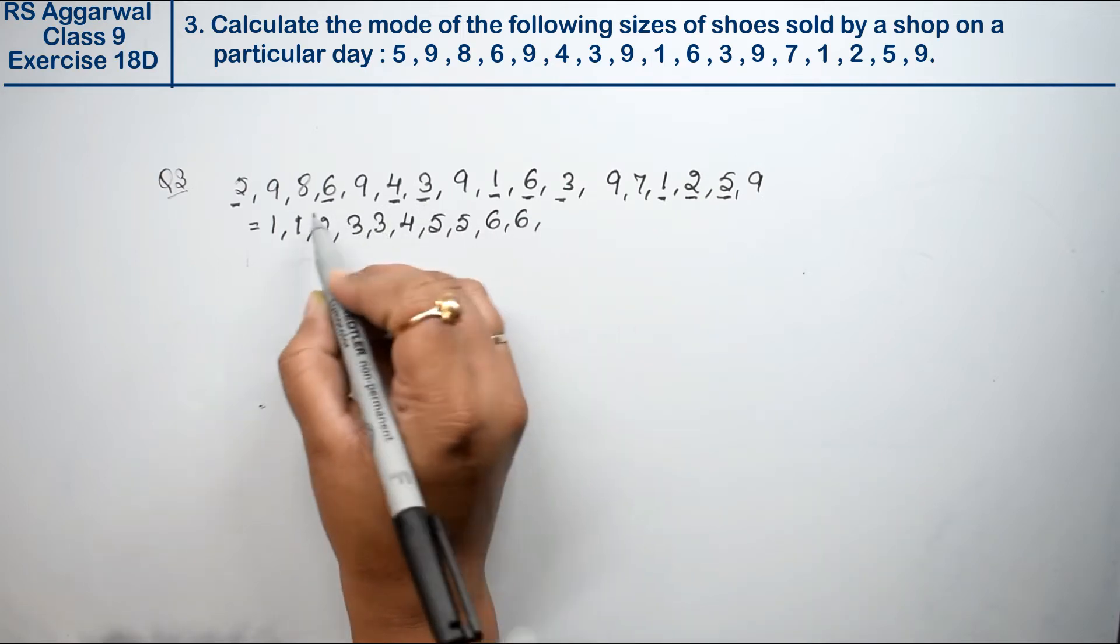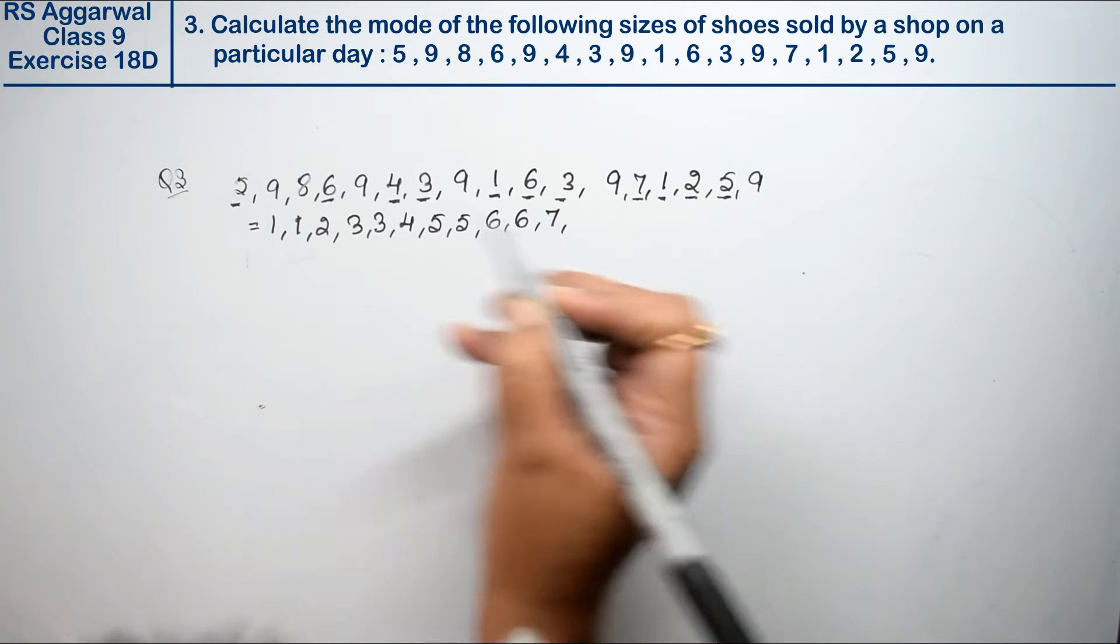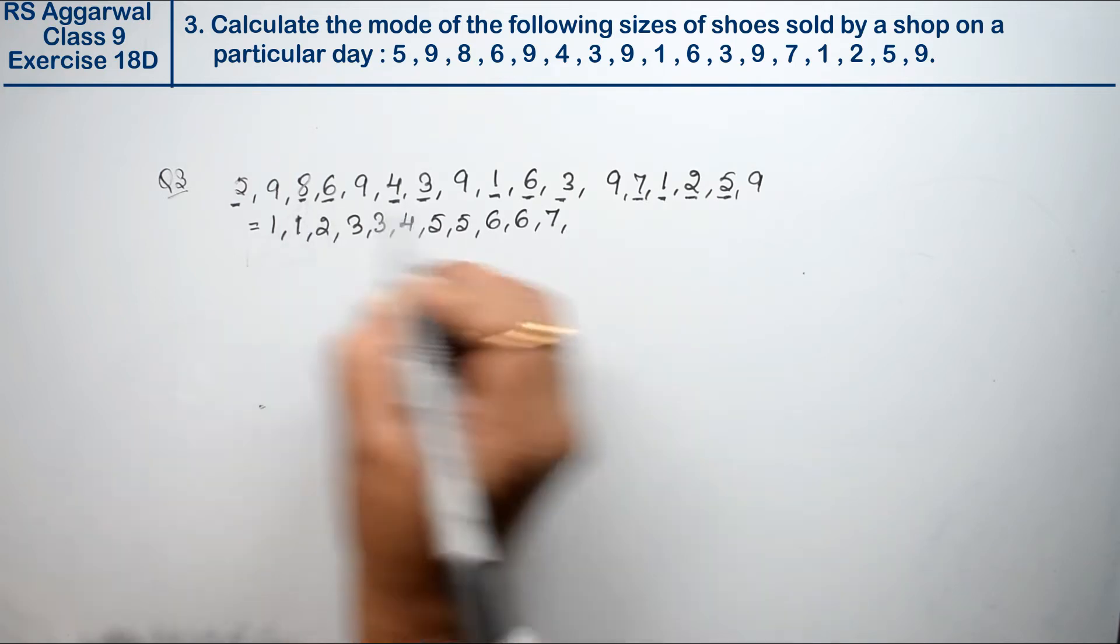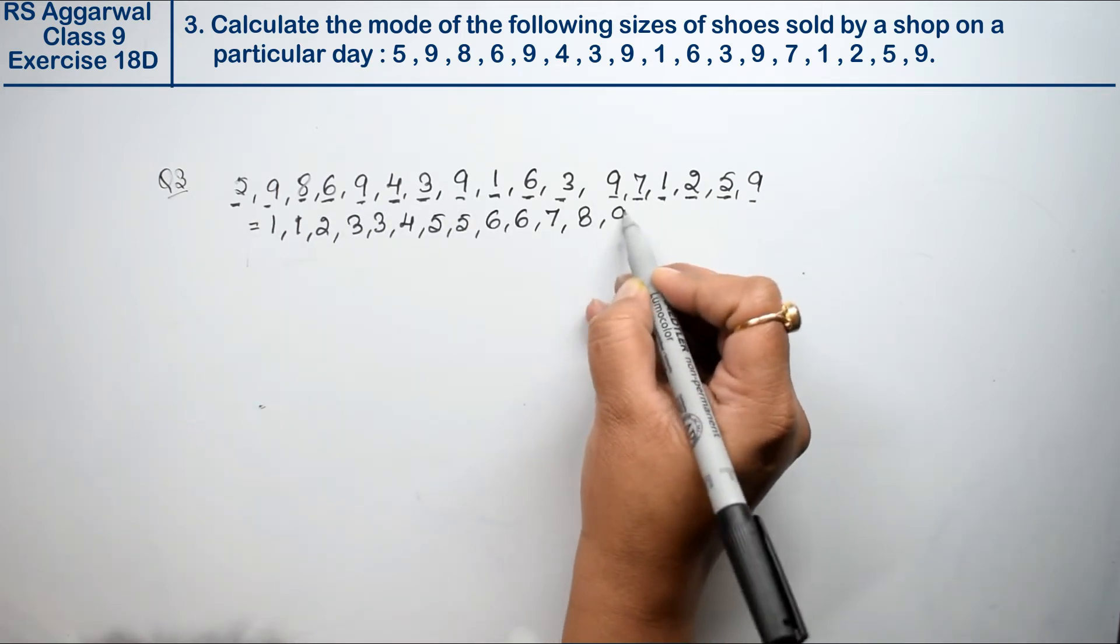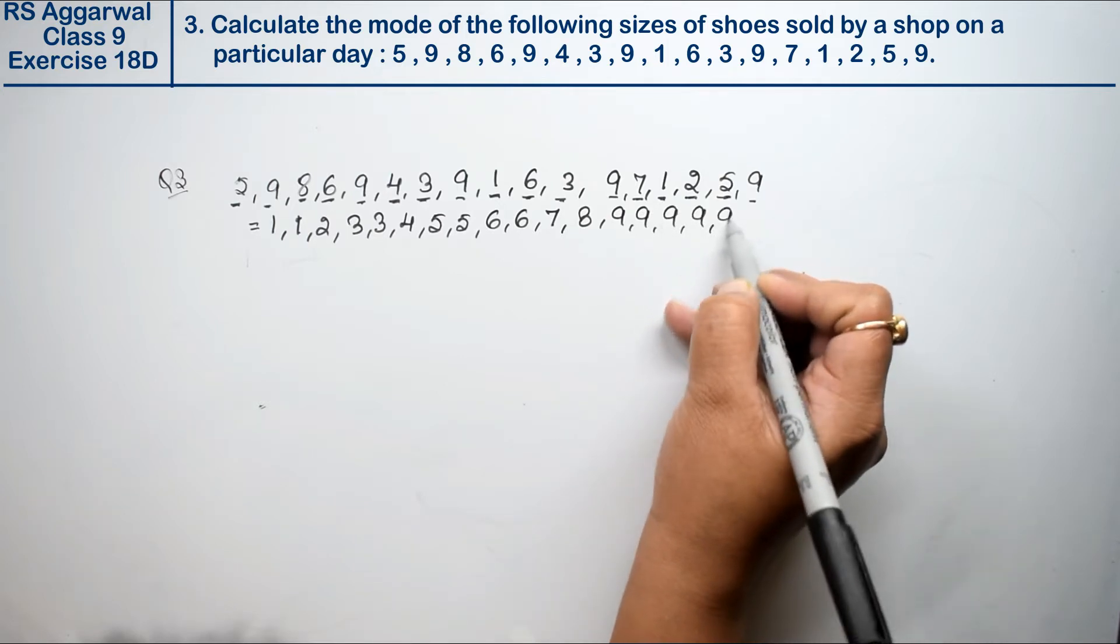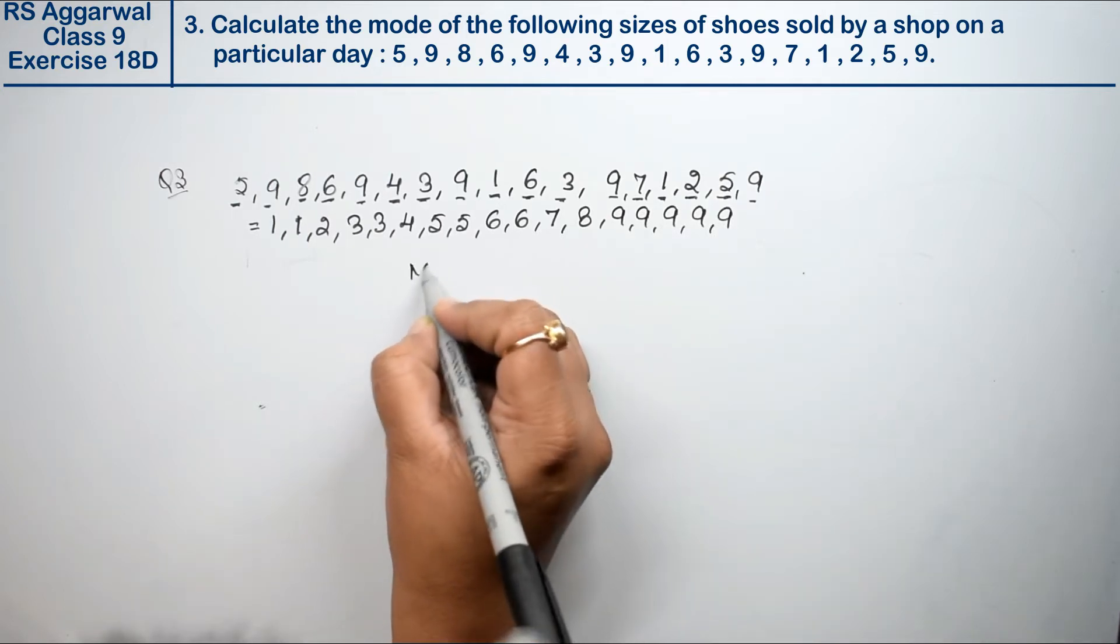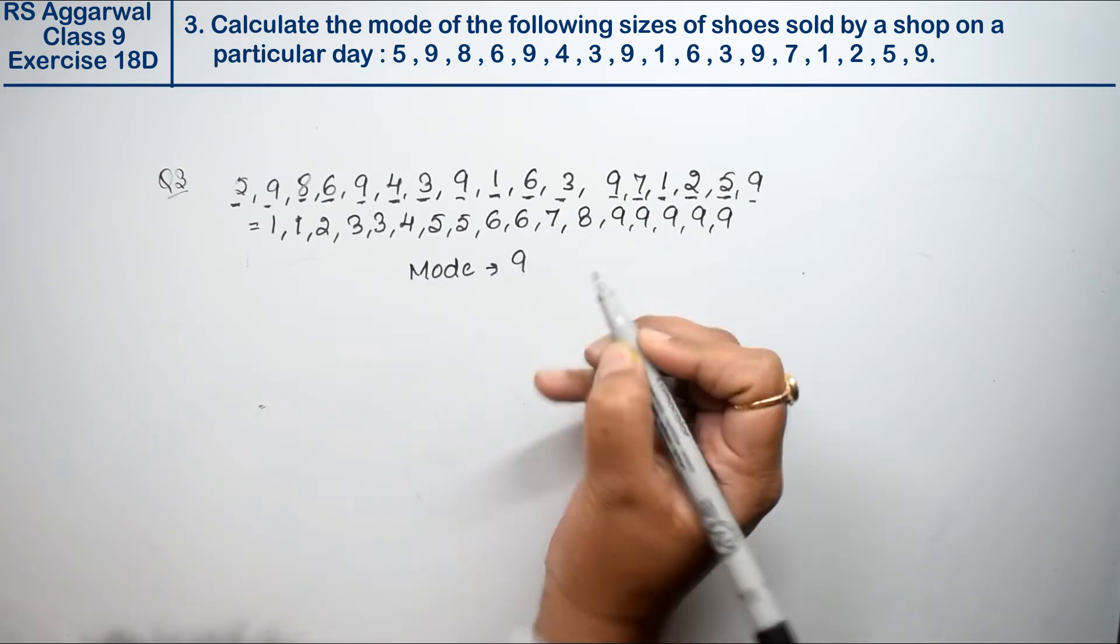Then 7 appears 1 time. 8 appears 1 time. And 9 appears 1, 2, 3, 4, 5 times - five times. So we clearly know that 9 is our most repetitive value. So what is our mode? 9.